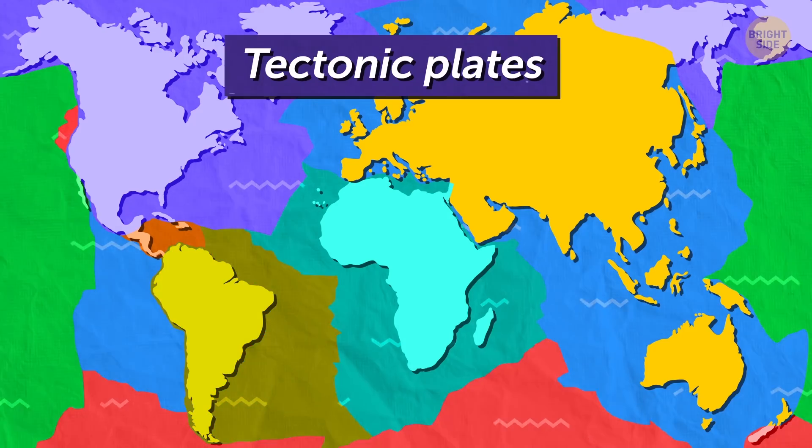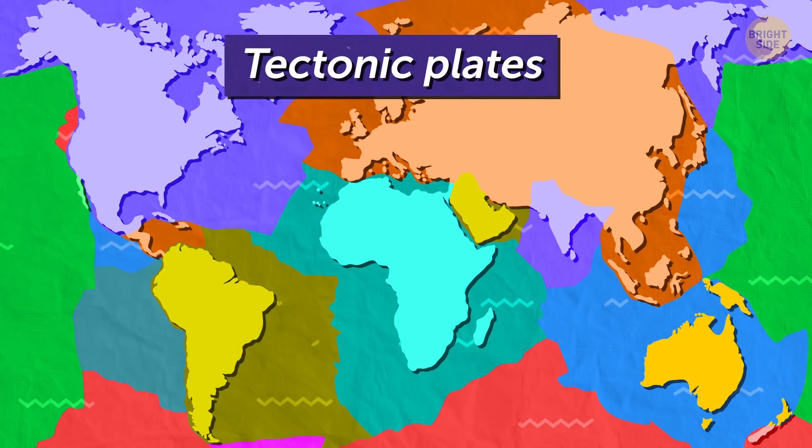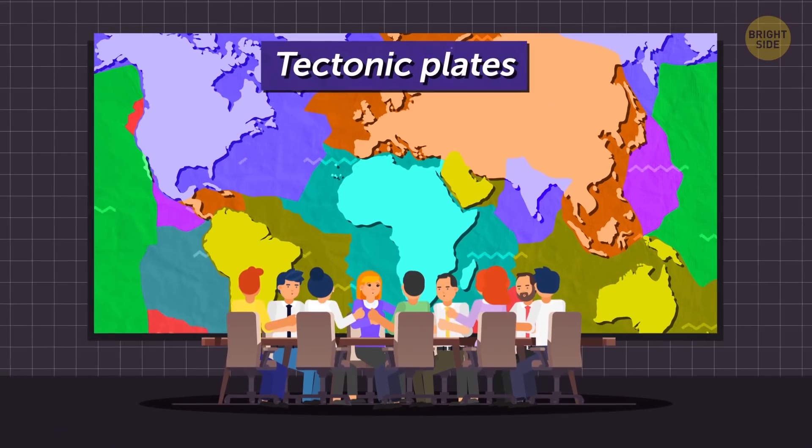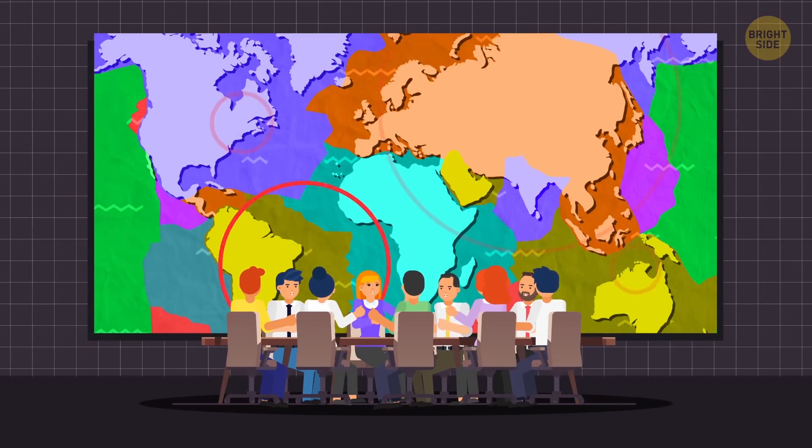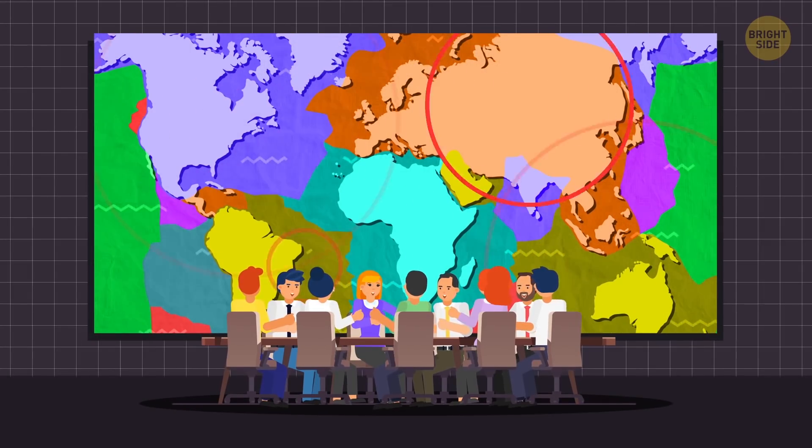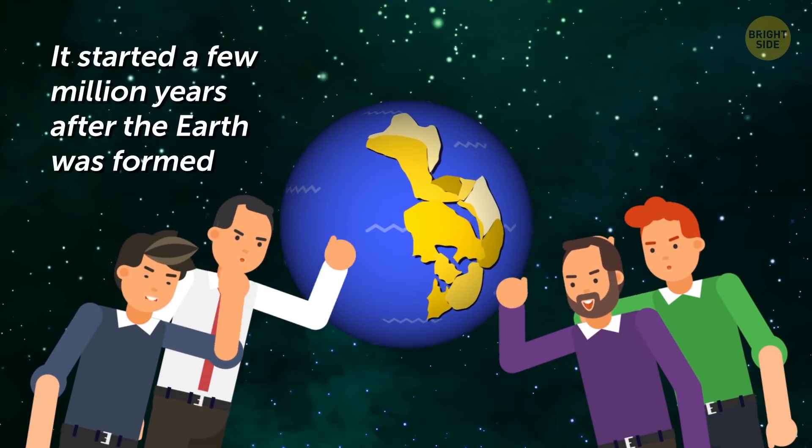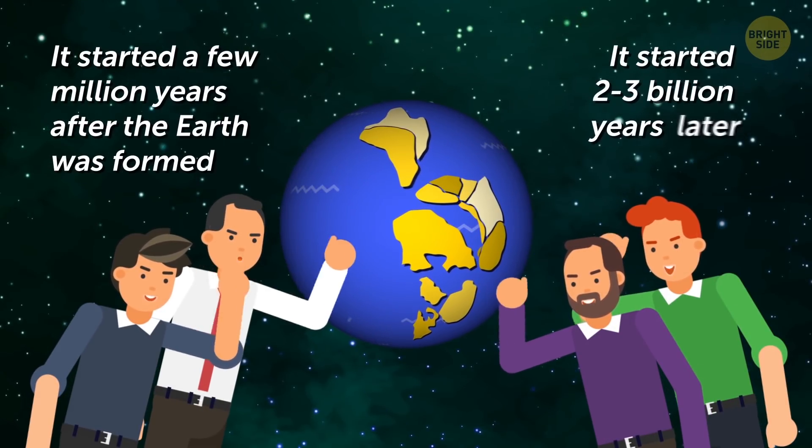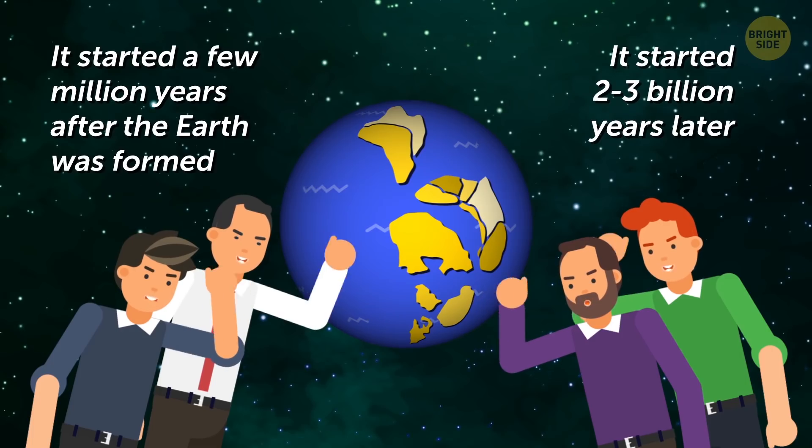The problem is, nobody knows what causes the beginning of a subduction. There is even disagreement among geologists on when the Earth plates started moving around. Some of them say it started a few million years after the Earth was formed, while others claim it started 2 to 3 billion years later.